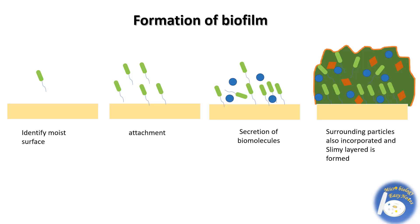Formation of Biofilm: First, free-floating microorganisms attach to the surface. Using pili, cells anchor themselves and adhere to the surface permanently. Cells then secrete various biomolecules and create a slimy structure around them for protection. This slimy structure together with microorganisms is called a biofilm, and it also contains material from the surrounding environment like minerals, soil particles, and blood components.